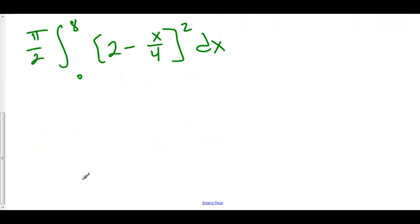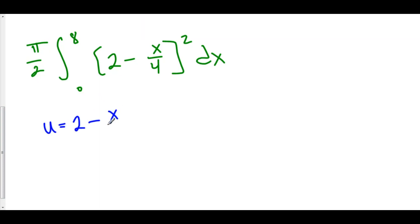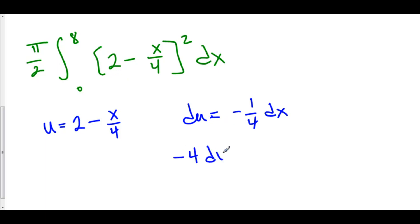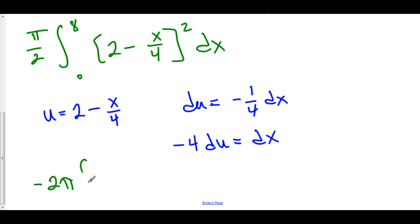We can use u-substitution — it's an easier way than multiplying everything out. Let u equal 2 minus x over 4, which means du equals negative one-fourth dx. There is no negative one-fourth dx, so we multiply both sides by negative 4, giving us negative 4 du equals dx. Pulling out the negative 4, we now have negative 4 times pi over 2 — that is negative 2 pi — times the integral of u squared du. We can also change our limits of integration: plugging in 0 gives 2, and plugging in 8 gives 2 minus 8 over 4, which is 2 minus 2, that's 0.